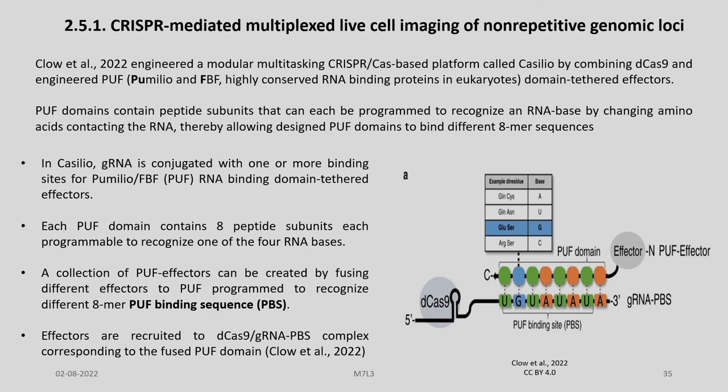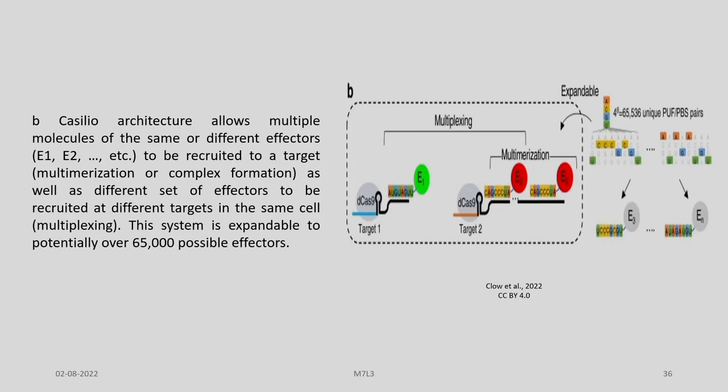This PAF domain contains eight peptide subunits, each programmable to recognize one of the four RNA bases. A collection of PAF effectors can be created by fusing different effectors to PAF programmed to recognize different octamer PAF binding sequences. The effectors are recruited to the D-Cas9/gRNA PBS complex corresponding to the fused PAF domain. The CasSILO architecture allows multiple molecules of the same or different effectors to be recruited to a target, as well as different sets of effectors to be recruited at different targets in the same cell.